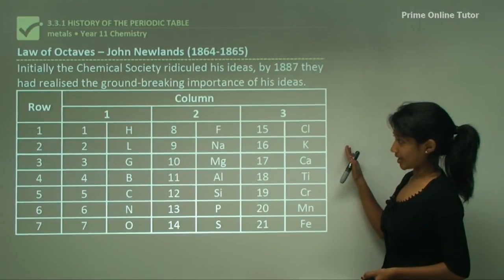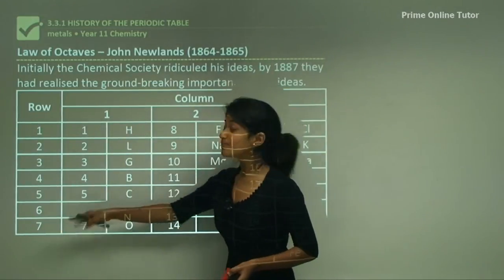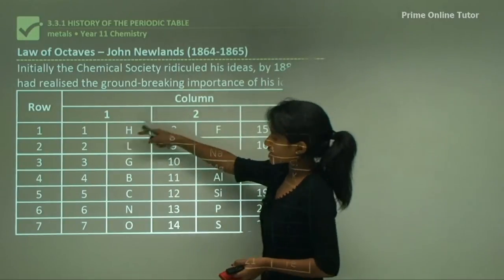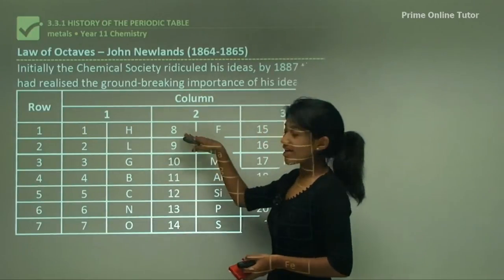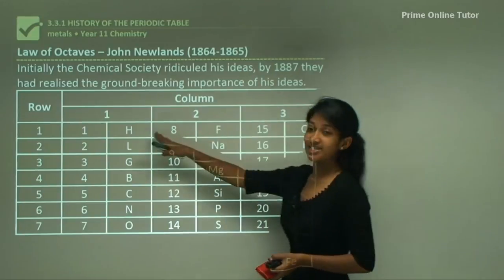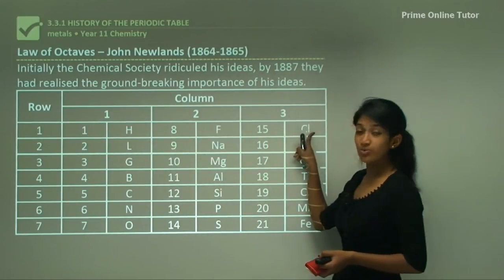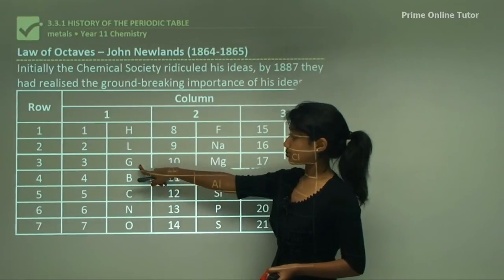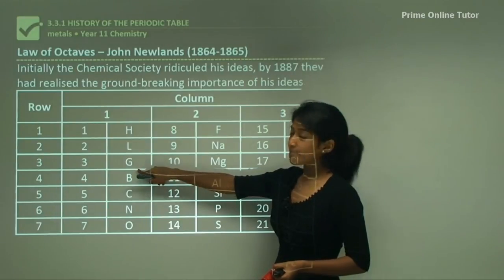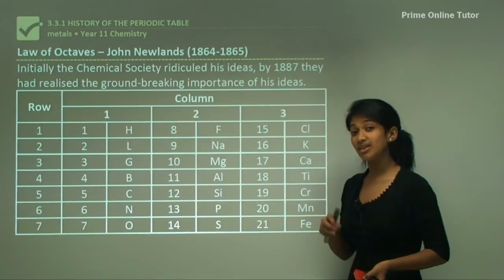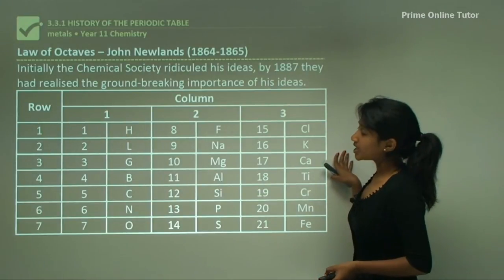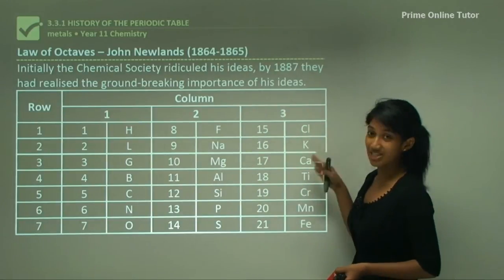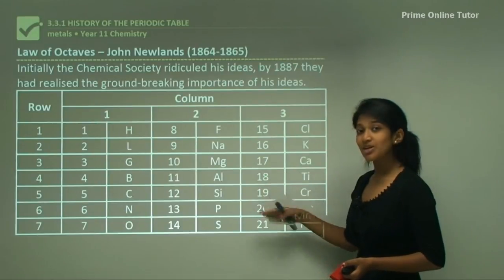This is what his periodic table looked like. He had seven rows going down and eight columns, so he grouped them — one, two, three, four, five, six, seven — and the eighth element would have the same chemical properties. So hydrogen, fluorine and chlorine would have the same chemical and physical properties according to him. You'd notice the chemical symbol 'G' here, which doesn't exist in our periodic table today. Initially the chemical society ridiculed his ideas, but by 1887 they realized the groundbreaking importance of his work, and today we take some of his skills to make our periodic table.